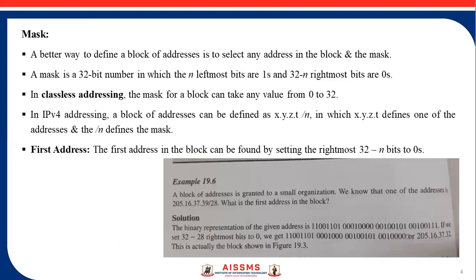A better way to define a block of addresses is to select any address in the block along with the mask. The mask is a 32-bit number in which the n left-most bits are 1s and the 32-n right-most bits are 0s. In classless addressing, the mask for a block can take any value from 0 to 32. In IPv4 addressing, a block of addresses can be defined as x.y.z.t/n, where x.y.z.t defines one of the addresses and /n defines the mask. Together, the address and the slash-n notation completely define the whole block — the first address, the last address, and the number of addresses.